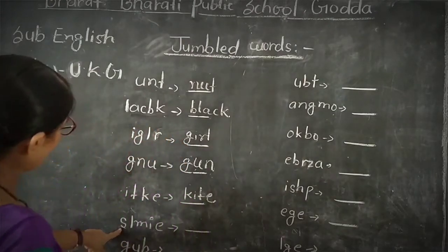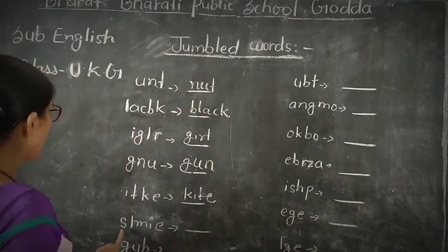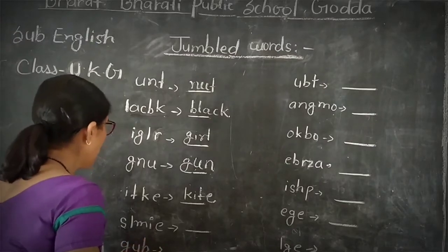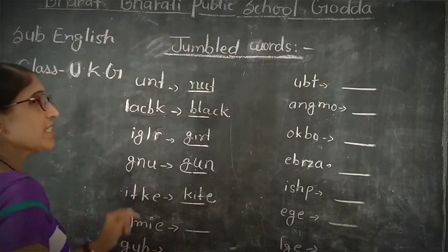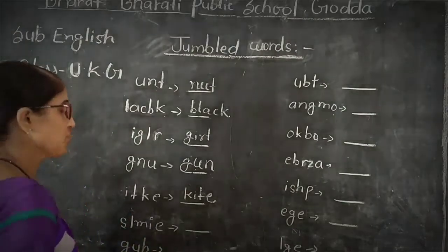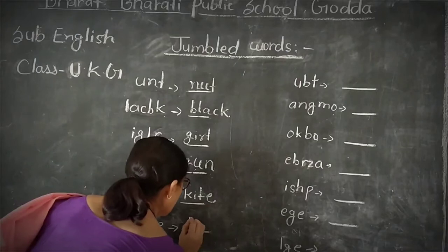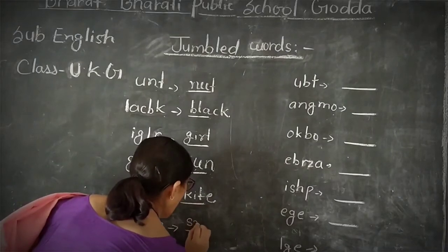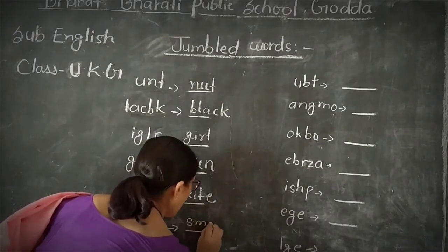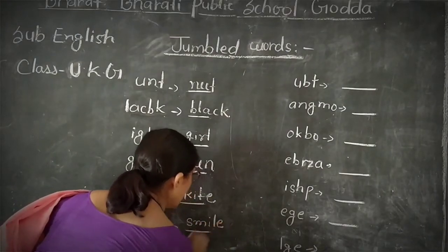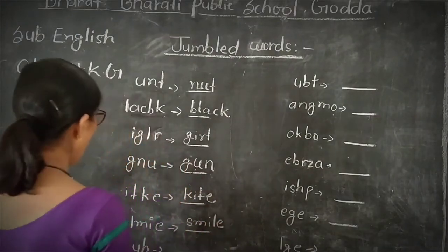Next word. L is wrong, without meaning. We will write the correct word here. S, M, I, L, E — SMILE. Smart.